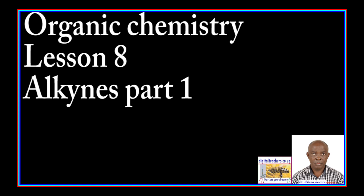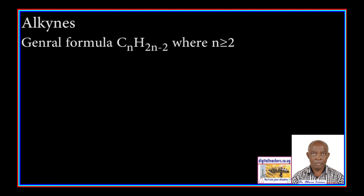Today we are going to study Organic Chemistry, Lesson 8: Alkynes. The general formula is CnH2n-2, where n is greater or equal to 2. They contain a triple bond.